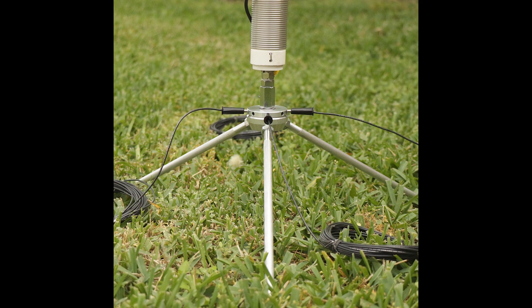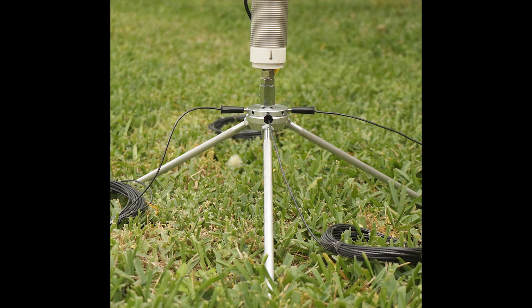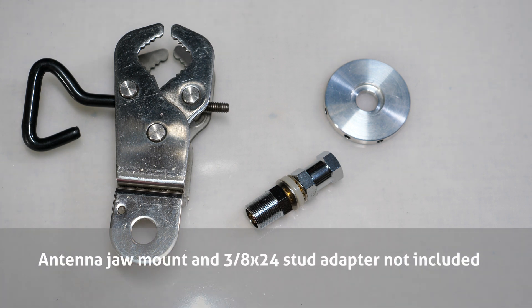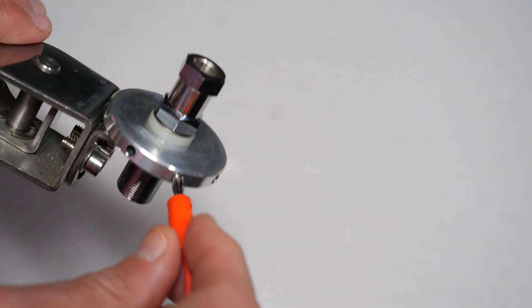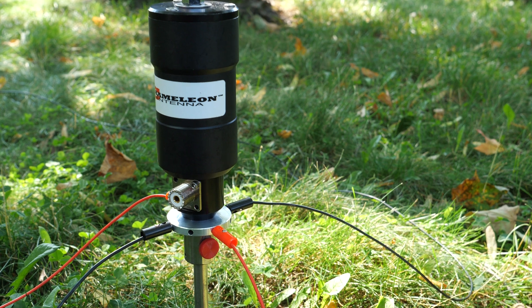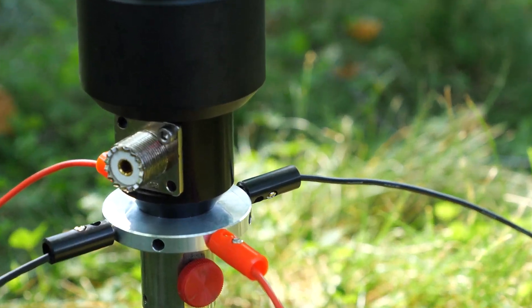The puck is designed to work with the existing components on your Wolf River coil tripod, as well as any other SO239 to 3-8 by 24 adapter type mount. Here I'm using a jaw clamp mount. It will also work with Chameleon's M-Pass II for an improved radial network.